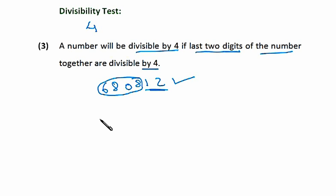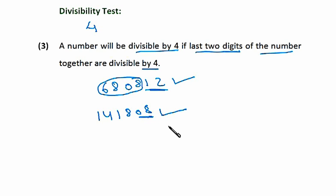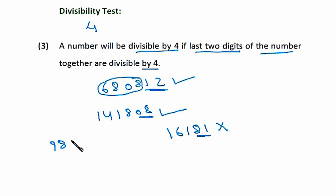Let's take another example: 141808. We just have to look at the last two digits, the units and tens — that's 08. Yes, it's divisible by 4: 4 × 2 = 8. Now suppose we have 1618181. Over here the last two digits are 81. Is 81 divisible by 4? No, 81 is not divisible by 4, which means this whole number is not divisible by 4. Suppose we have another number: 984844. We just look at the last two digits — that's 44. Yes, it is divisible because 4 × 11 = 44. I hope you understood this.